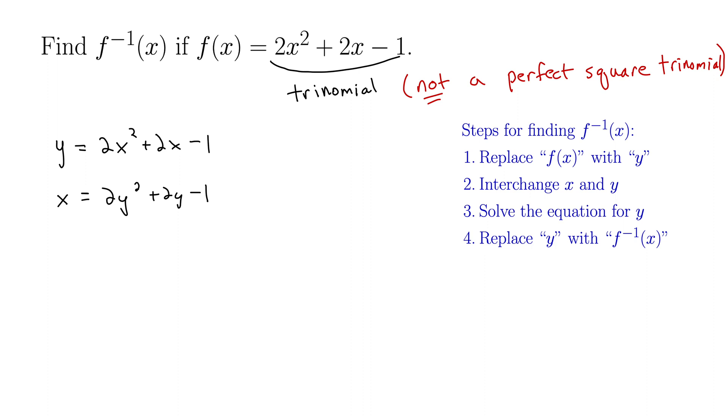But now the very challenging part: solve the equation for y. The key here, since we don't have a perfect square trinomial, is to make it a perfect square trinomial, and we do that using completing the square.